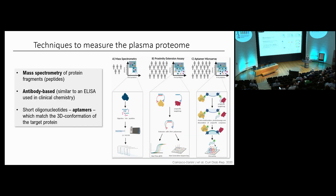It is only relatively recently that we can do this at scale. Historically, measuring the circulating proteome has been challenging due to the massive difference in concentration of proteins found in blood. Only recently have techniques achieved a balance between specificity and throughput. Nowadays, these techniques are broadly divided into two classes: those based on mass spectrometry, and those based on affinity reagents.